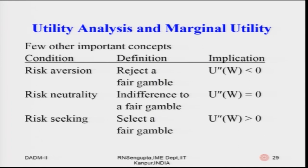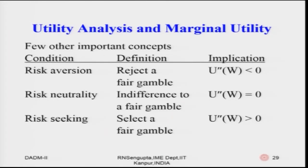A few important concepts in utility analysis: a risk averse person would reject a fair gamble because U''(W) < 0 — they prefer the certainty event. A risk neutral person is indifferent between a fair gamble and the certainty event because U''(W) = 0. A risk seeking person would select the gamble because U''(W) > 0. The decision taken by the decision maker is based solely on his or her perception of risk.